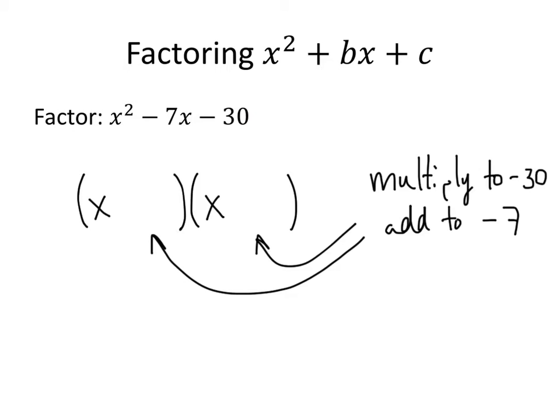At this point, it's trial and error: find two numbers that multiply to give negative 30 and add to give negative 7. Let's think about ways to factor negative 30. Well, 30 is 3 times 10, so negative 30 could be negative 10 and positive 3. The sum of those two numbers is negative 7, so that works — negative 10 and positive 3. Sometimes you'll get it right away, and sometimes it takes a lot of trial and error.